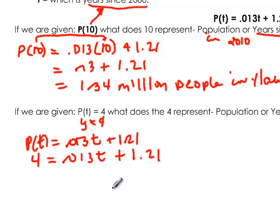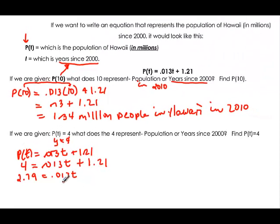If we subtract 1.21 from 4, we get 2.79 = 0.013t. And if we divide by 0.013...